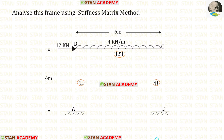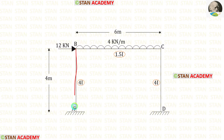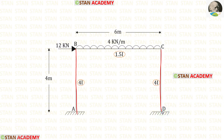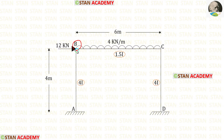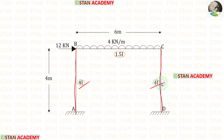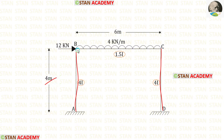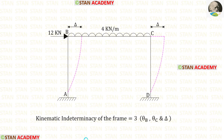Hello everyone, today we are going to analyze this frame using the stiffness matrix method. In this frame we have columns AB and CD, and beam BC. In the columns there are no loads. In beam BC we have a uniformly distributed load of 4 kN/m acting for the full span. At point B we have a nodal point load of 12 kN acting towards the right side. The moment of inertia for the columns is 4I and for the beam it is 1.5I. Height of the columns is 4 meters and length of the beam is 6 meters.